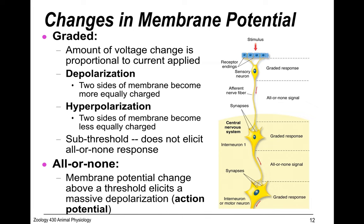Graded potentials occur when there is a spike but it's not enough to create an action potential — it causes depolarization or hyperpolarization but is sub-threshold, so it doesn't produce an all-or-none response. If a stimulus crosses that threshold, it generates an action potential and it will be all-or-none. Graded potentials are really important for gathering sensory information, allowing integration before deciding what to respond to.